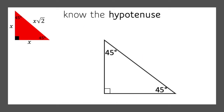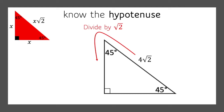What happens if we know the hypotenuse of a 45-45-90 triangle? Let's say it's 4 times the square root of 2. We just have to reverse the process — so instead of multiplying by the square root of 2, we're going to divide by the square root of 2. So 4√2 divided by √2 is 4. And if we know that leg, we automatically know that the other leg is also 4.